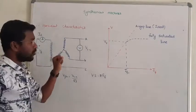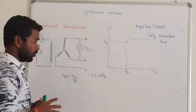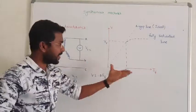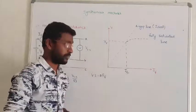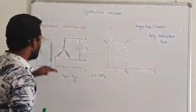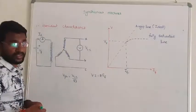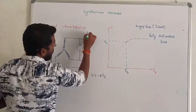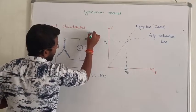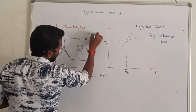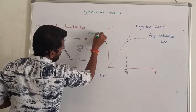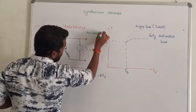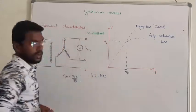The alternator is open circuit. Case number one: we are maintaining the speed of the alternator as constant. So in such a case, speed will be maintained as constant.